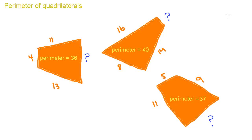Right here we're trying to find the missing side of the quadrilaterals. Quadrilateral is just a fancy word for a four-sided shape.